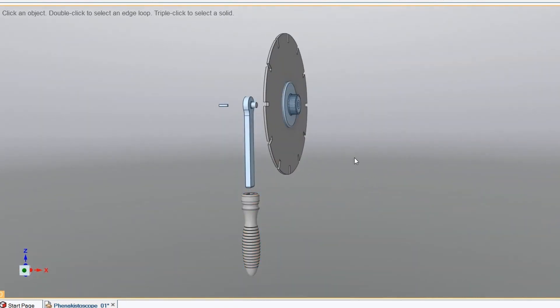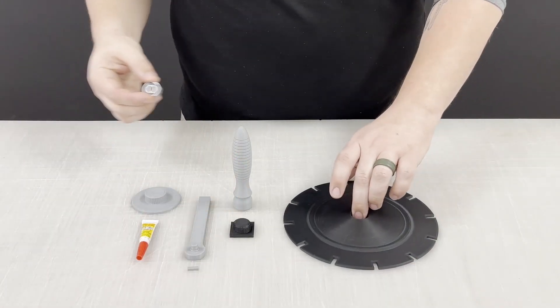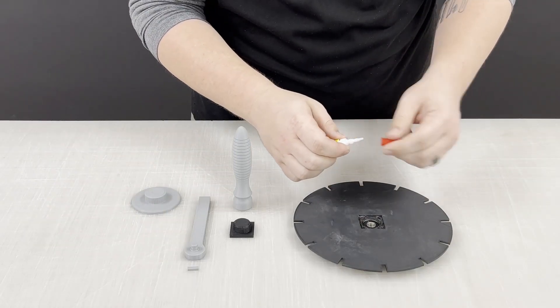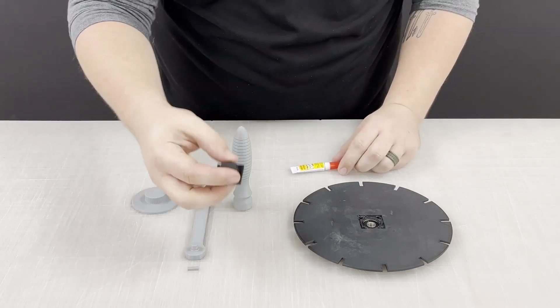Let's print it and put it together. To assemble your phenakistoscope, first pop in the ball bearing, then glue the disc guide into the square hole on the front of the main disc.